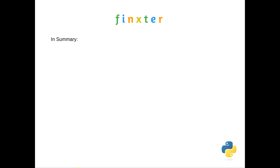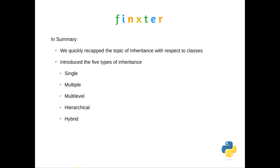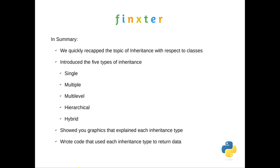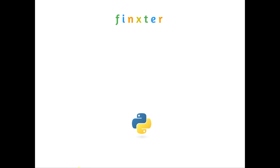In summary, we recapped the topic of inheritance with respect to classes, introduced the five types of inheritance, showed block graphics explaining each type, and wrote code that used each inheritance type to return data — demonstrating how we can reuse code and attributes through multiple levels of inheritance to successfully return the information required. That's it on the five types of inheritance. I hope that was useful and thank you very much for watching — we'll see you in the next video.